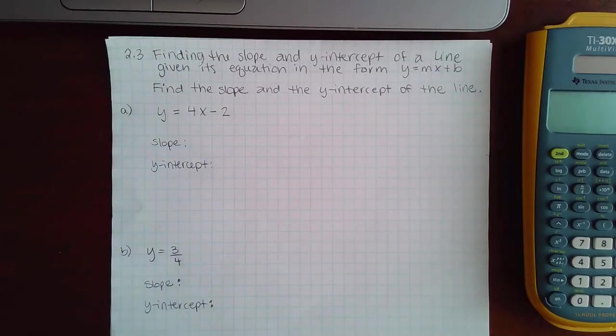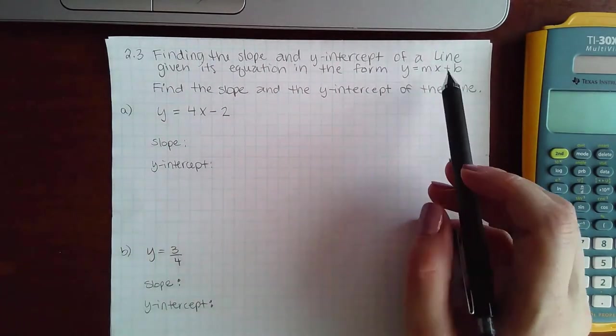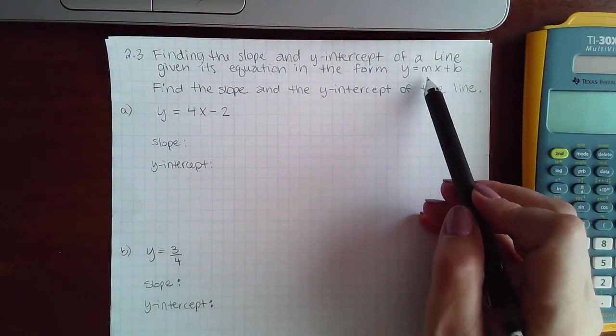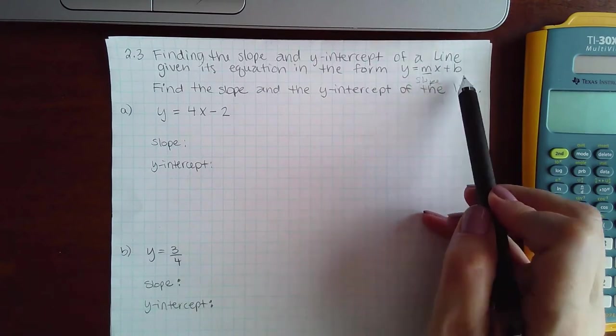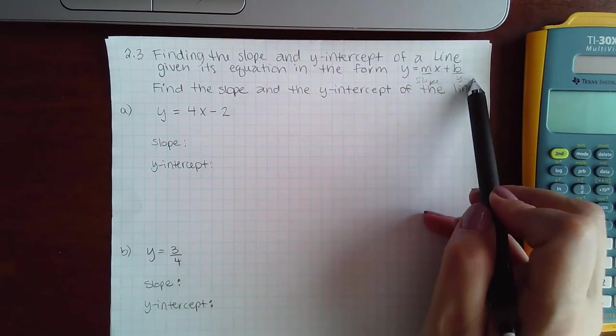Here we have finding the slope and y-intercept of a line given its equation in the form of y equals mx plus b. So since it's already in the form y equals mx plus b, you just want to figure out what the m is, which is the slope, and then what the b is, which is the y-intercept.